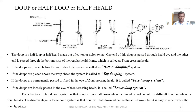Dupe, or half loop, or half yield. A dupe is a simple element which is produced by using cotton or nylon twine. One end of the dupe is passed through the heald eye and the other end is passed through the bottom strip of the regular heald frame. This is called the front crossing heald. The yarn is drawn through the loop portion of the dupe so it may be lifted up and down as required for Leno weave production.